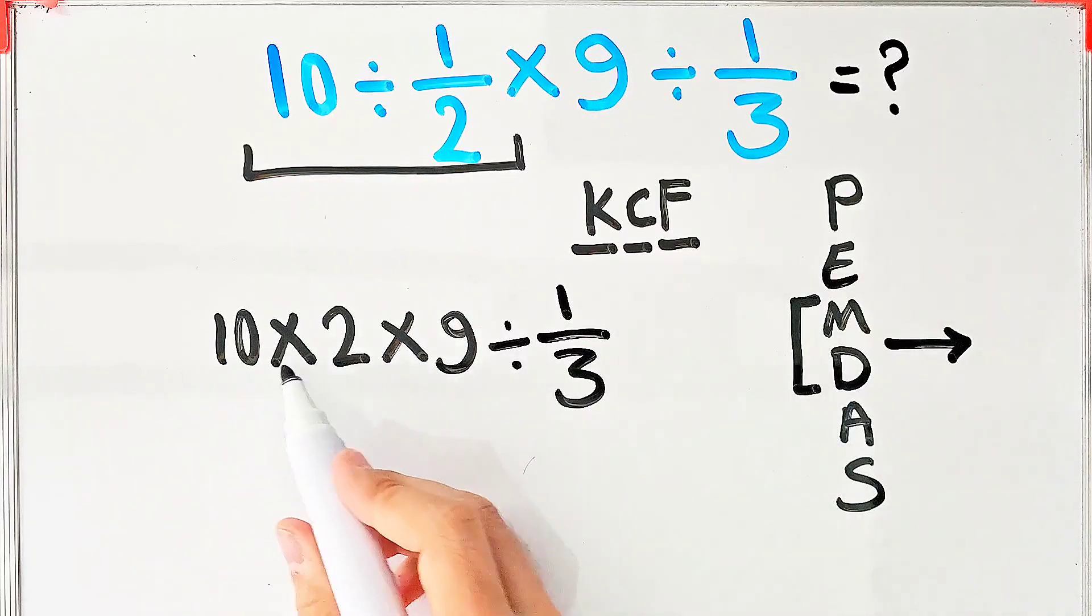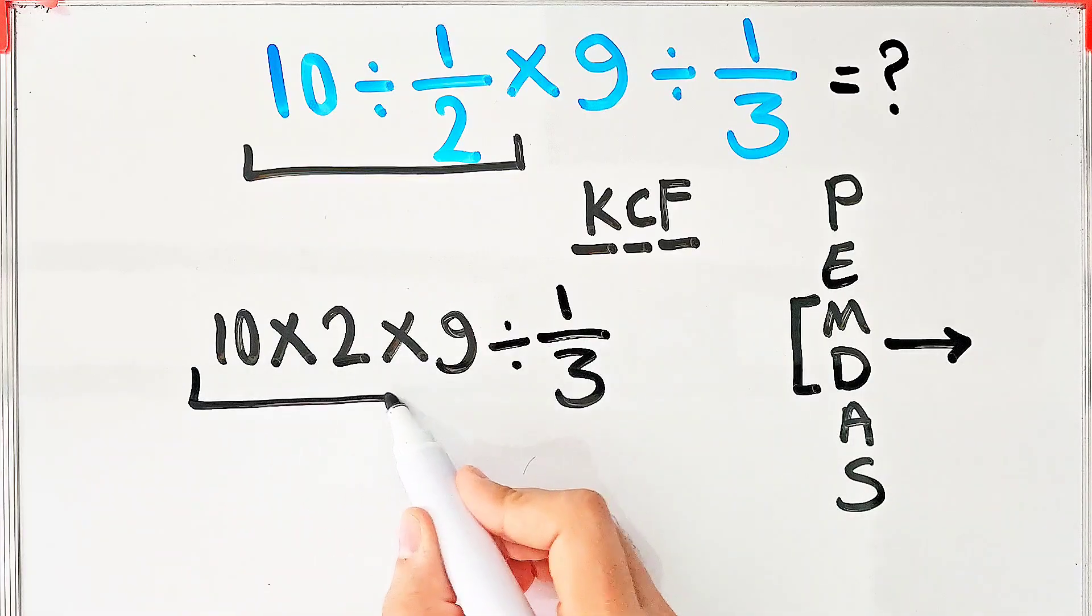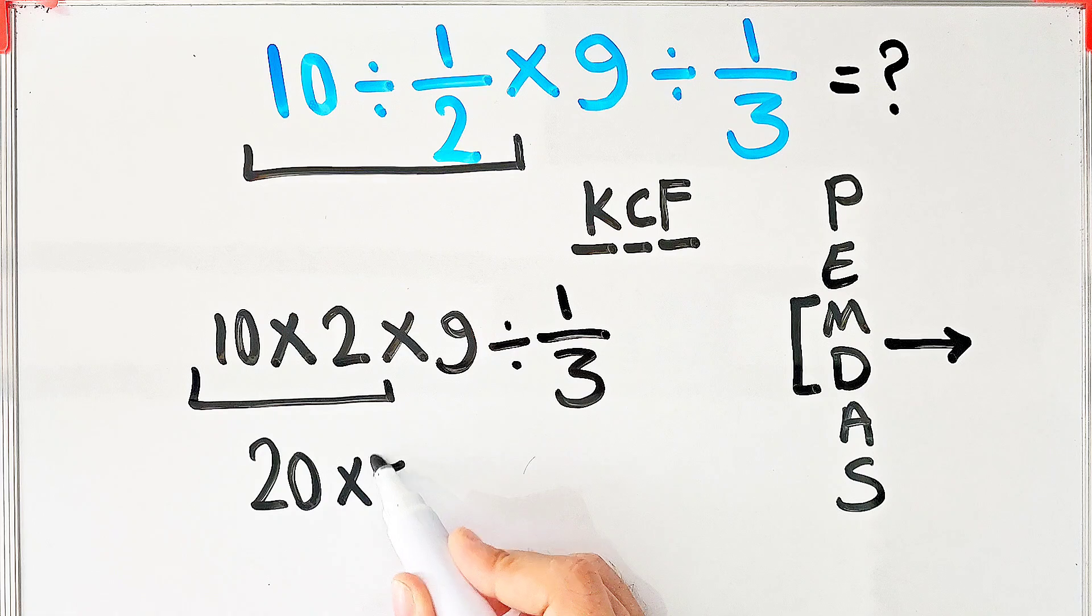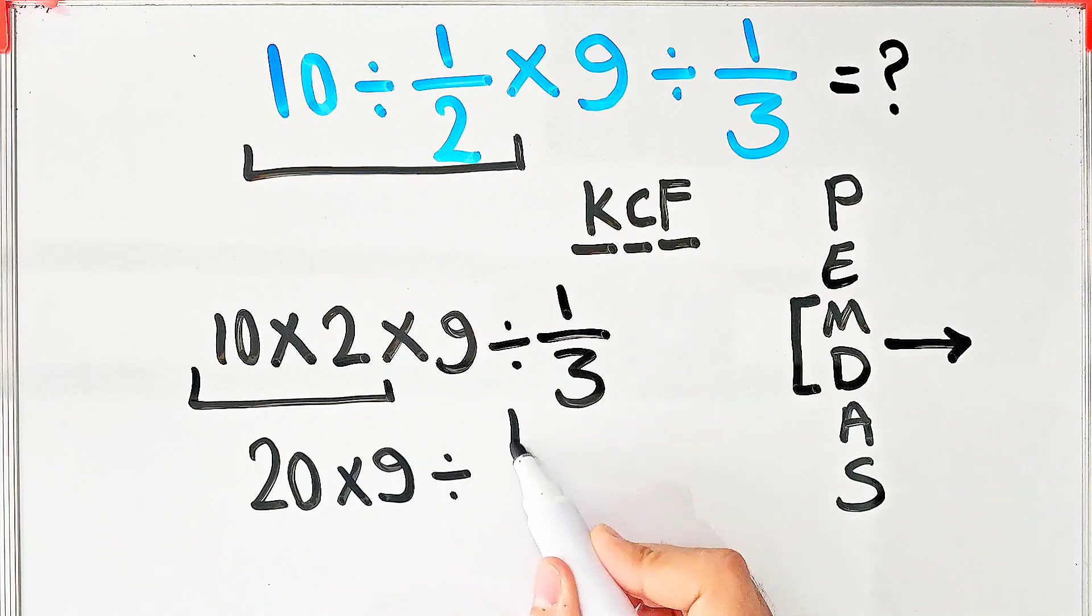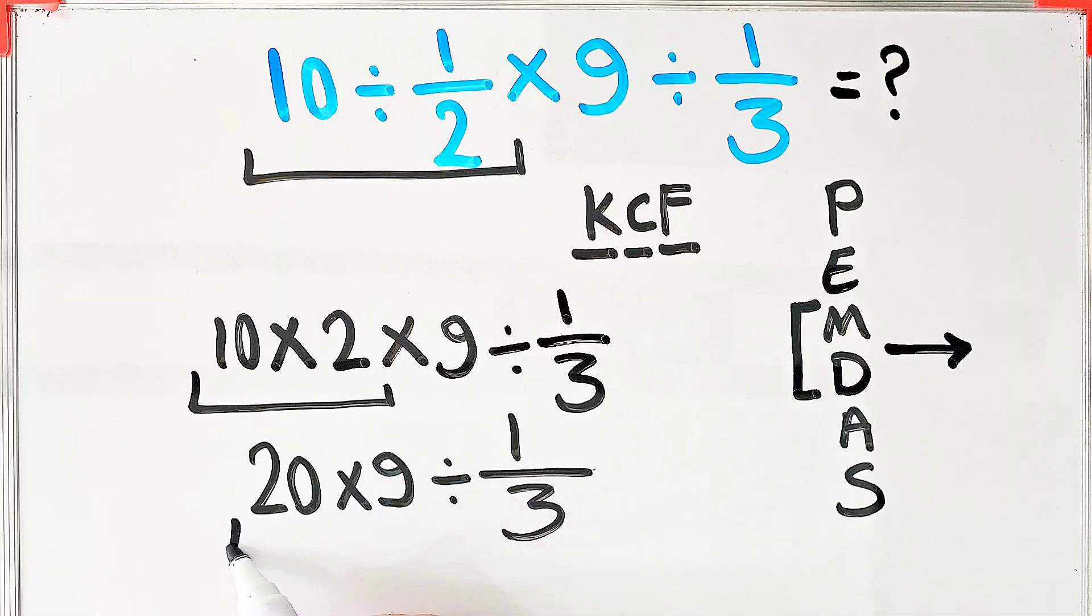Again, because we have multiplication and division, we start from the left and simplify. 10 times 2 equals 20. 20 times 9 then divided by 1 over 3. We have 20 times 9, that equals 180, then divided by 1 over 3.